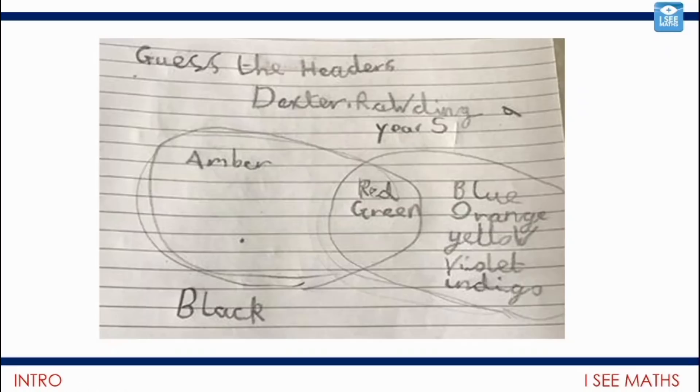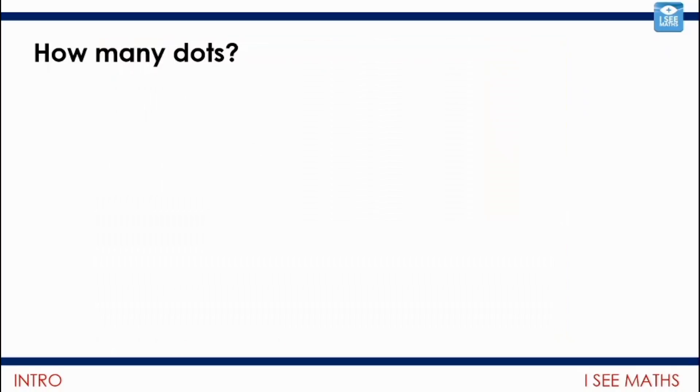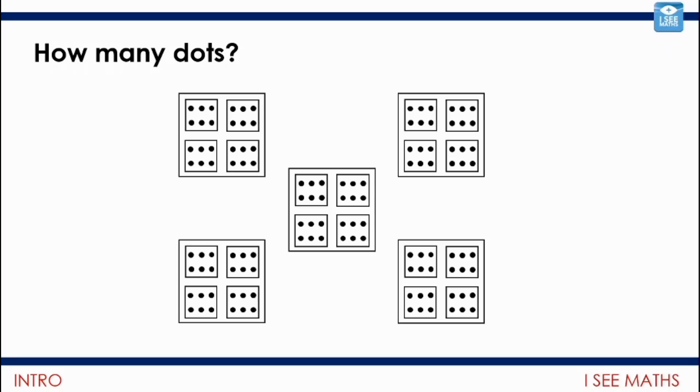We're going to introduce our new theme for this week around multiplication and division with a how many dots task. Pause the video. How many dots do you see? I thought, in each of these squares there are 24, there's four lots of six. And then there are five lots of 24. I like doing five times 24 by doing ten times 24 and then halving. So 120 dots.